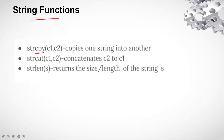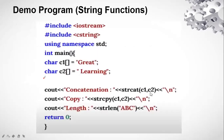There are three important string functions. First is strcpy(c1, c2) — string copy — which copies the string stored in c2 into c1. Second is strcat(c1, c2) — string concatenation — which joins two strings; for example, if c1 is 'Anil' and c2 is 'Sharma', strcat gives 'Anil Sharma'. Third is strlen(s) — string length — which returns the size or length of the string s.